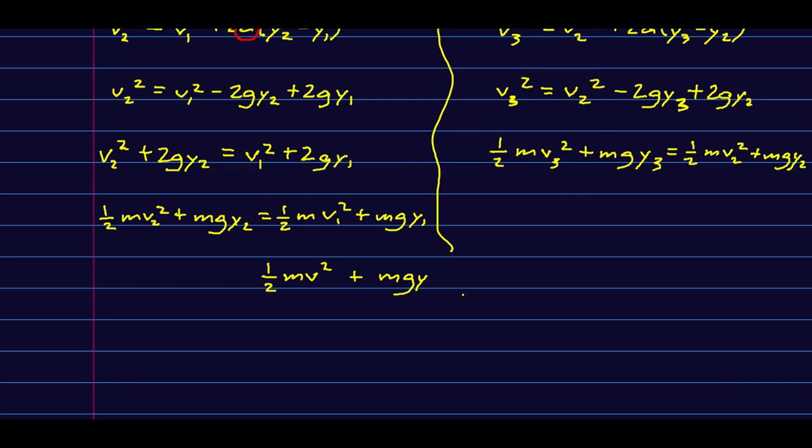So this expression, a half Mv squared plus MgY is a constant. It's a conserved quantity. And so this is the thing we're going to call the energy. And look, this piece has to do with how fast the ball is going. That's the kinetic energy. And this piece has to do with how high the ball is. That's the gravitational potential energy.